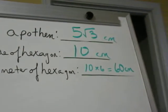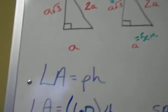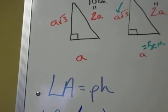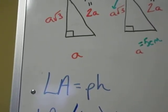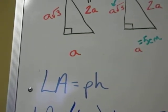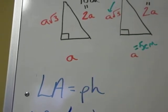We're now ready to find the lateral area and surface area. The lateral area formula is to take the perimeter of the hexagon and multiply it by the overall height of the prism. Well we figured out again that the perimeter of the hexagon is 60 centimeters.